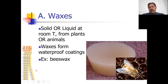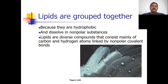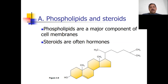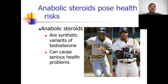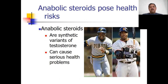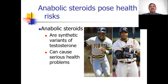Waxes can be solid or liquid at room temperature and can come from plants or animals. They form waterproof coatings — examples include candle wax and beeswax. Phospholipids and steroids have a slightly different structure but are classified as lipids because they act similarly. Anabolic steroids are synthetic variants of testosterone and, when ingested, can impose health risks.